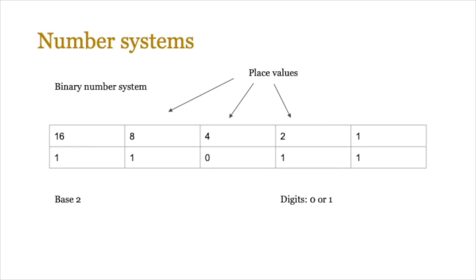The next number system is base 2, the binary number system. There's a branch of mathematics called Boolean algebra that you've likely covered before. Computers use two digits, 0 and 1, and place values go up in units of 2: 2, 4, 8, 16, 32, and so forth — base 2 raised to the power of 0 for 1, power of 1 for 2, and so on. Nothing new here since IGCSE, so we'll move on.